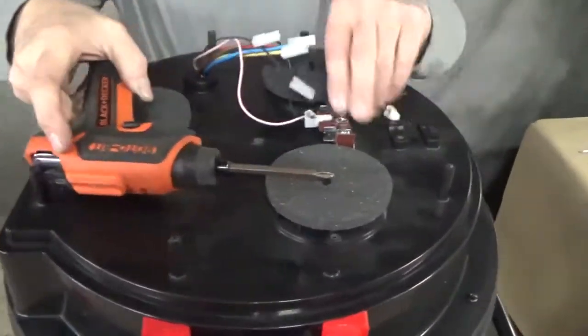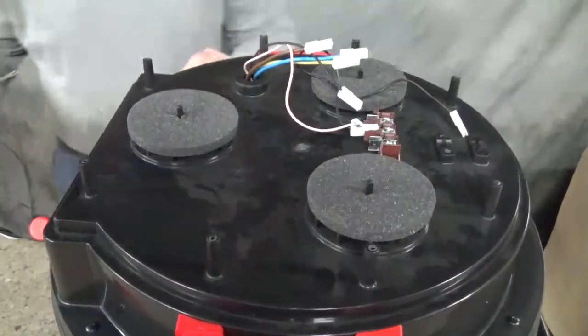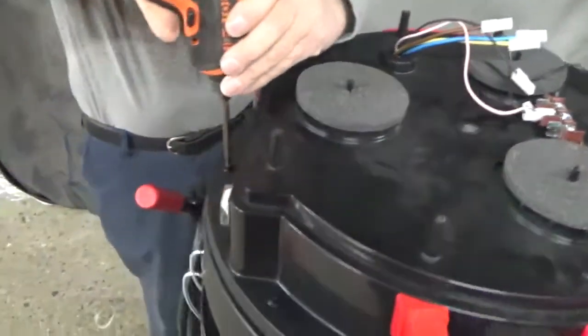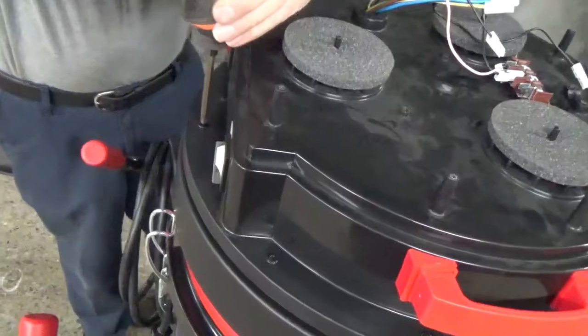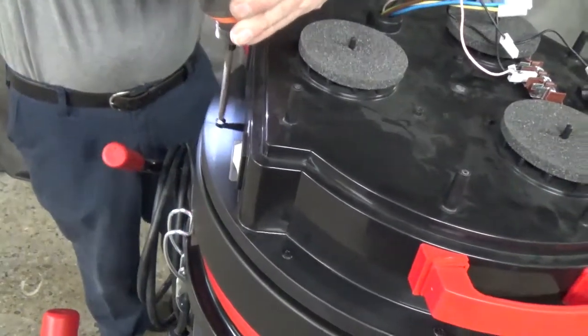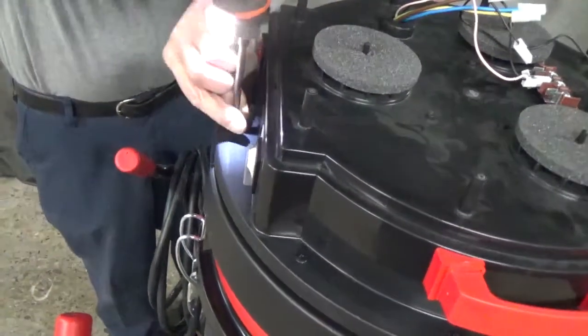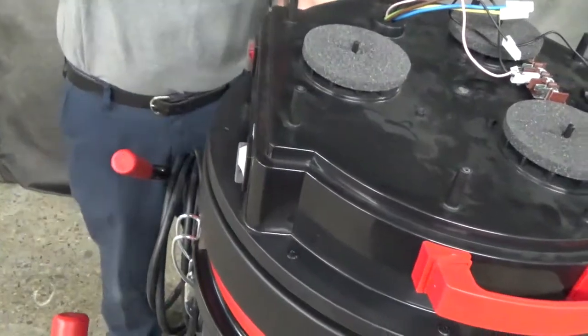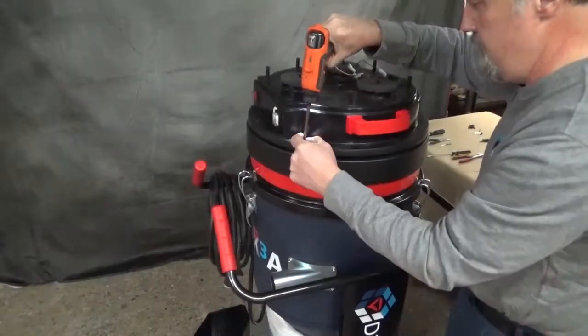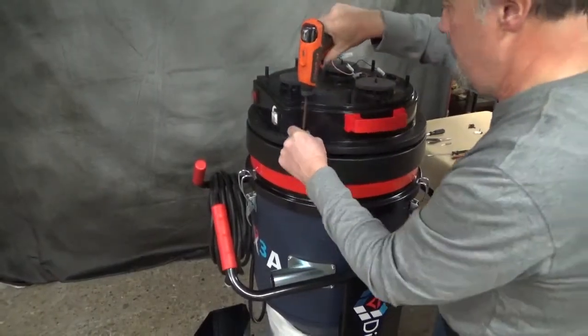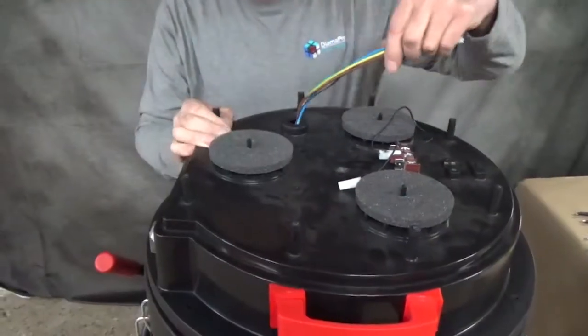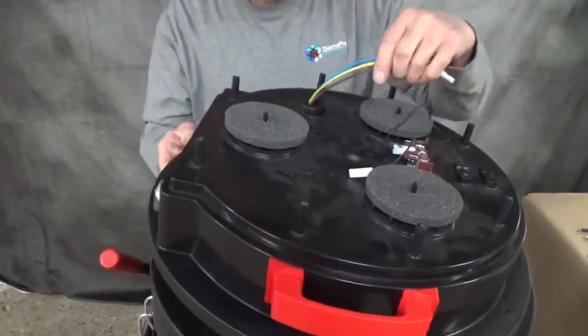At this point, we should be able to remove the 10 screws in the second or the middle cover. There's a total of 10. At this point, we're now ready to lift the second cover.